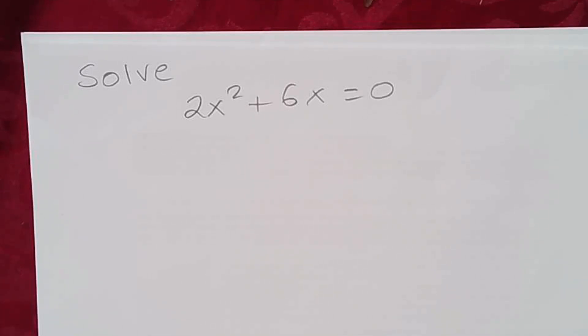Hello everybody, today we're going to solve the quadratic equation 2x² + 6x = 0. Now if you notice here, the constant term is missing.